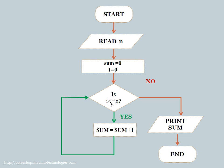So it increments and goes back to check the condition again. If the condition is true, sum equals sum plus i executes again, and again it checks the condition. This continues until i increments to a value greater than n — for example if n is 10 and i becomes 11, then 11 less than or equal to 10 is false, so it comes out of the loop. Then the execution path prints the sum calculated in the entire loop iteration and ends the program. We can see a rectangle is used to do calculation and initialization of values — all processing is written in a rectangle.